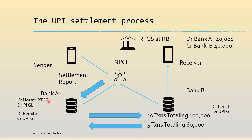When this process happens, it credits the NOSTRO RTGS account and debits the UPI GL, so the UPI GL gets netted off. While here it is a debit on Bank A, the NOSTRO RTGS is a credit — because the NOSTRO RTGS is nothing but a shadow mirror account and the balances will be in opposite signs.